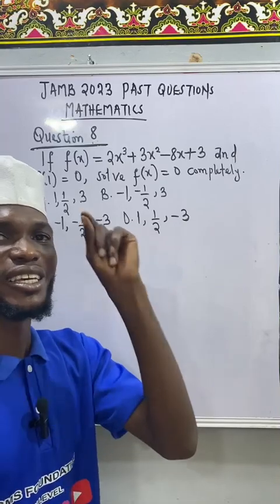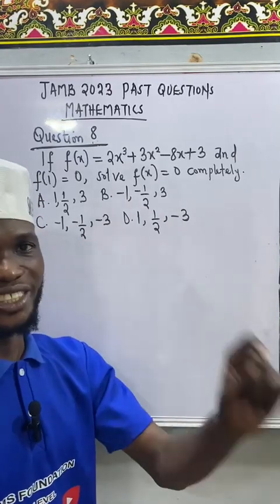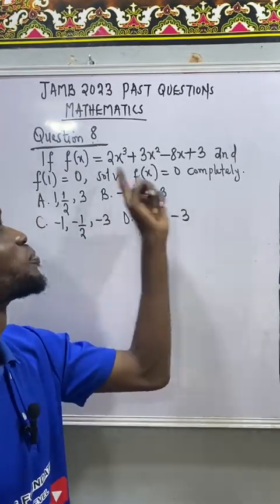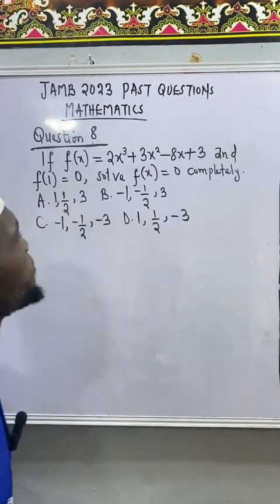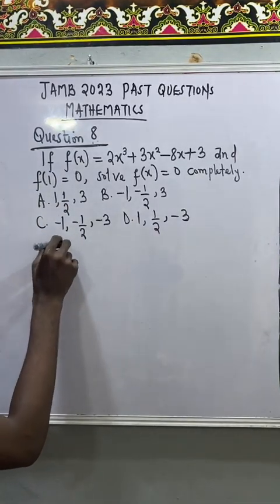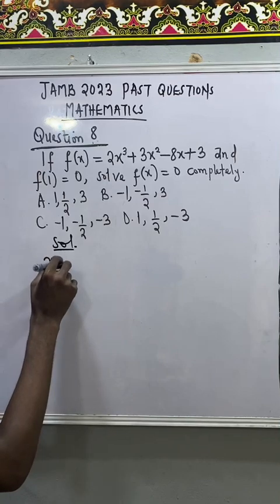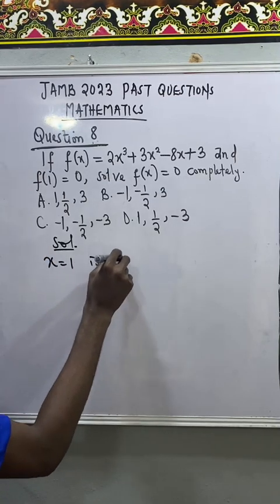That is, 1 is a root of the equation that this polynomial will give. So now, that means x equal to 1 is a root.